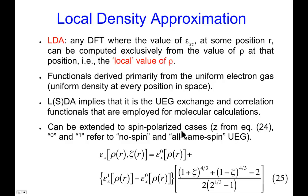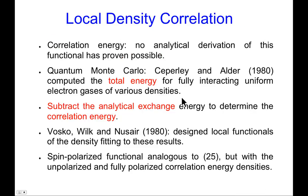If you want to extend to the spin-polarized case considering both alpha and beta spins, you can take the exchange energy density — which now depends on electron density and spin polarization — as a combination of the spin-free exchange energy density and an additional term depending on spin polarization. Note that if zeta equals zero, meaning no spin polarization, you get one-to-the-four-thirds plus one-to-the-four-thirds equals 2 minus 2, giving zero, so the spin correction vanishes and you recover the spin-free case.